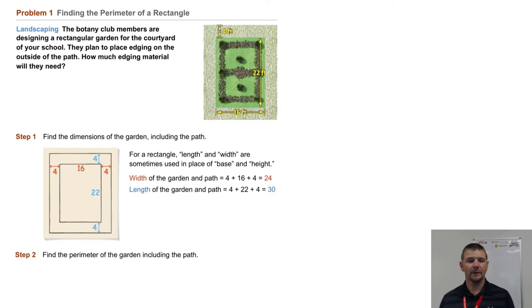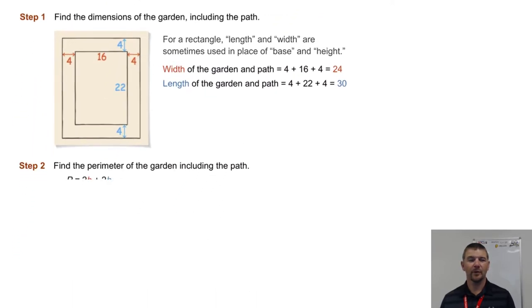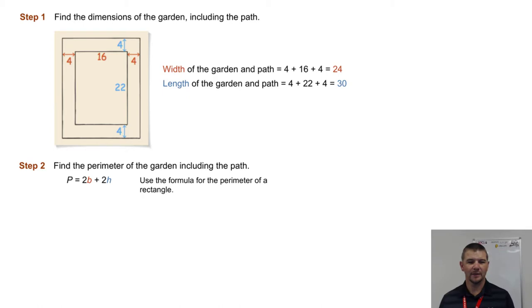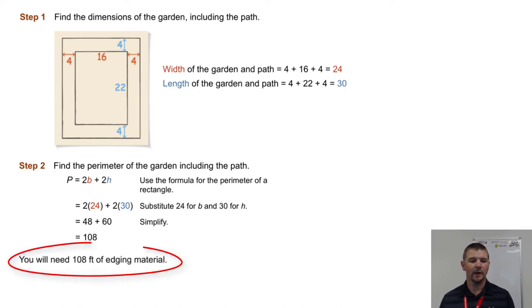Step two, we'll find the perimeter of the garden, including the path. The perimeter is 2 times b plus 2 times h. Recall that's the formula for the perimeter of a rectangle. For us, in this case, that's 2 times 24 plus 2 times 30, which is 48 plus 60, or 108. So we will need 108 feet of edging material.